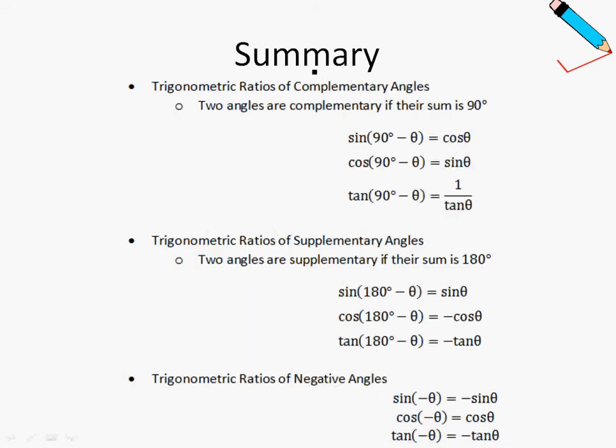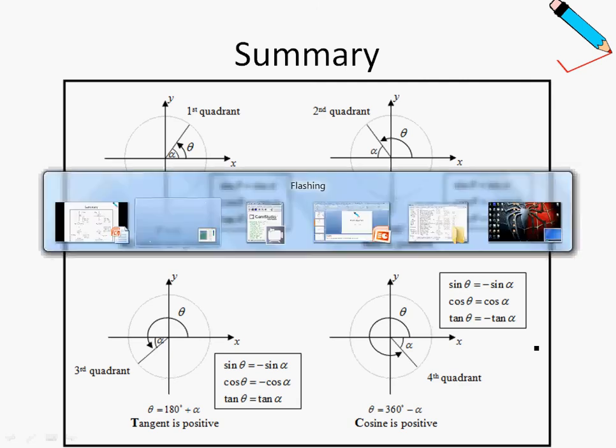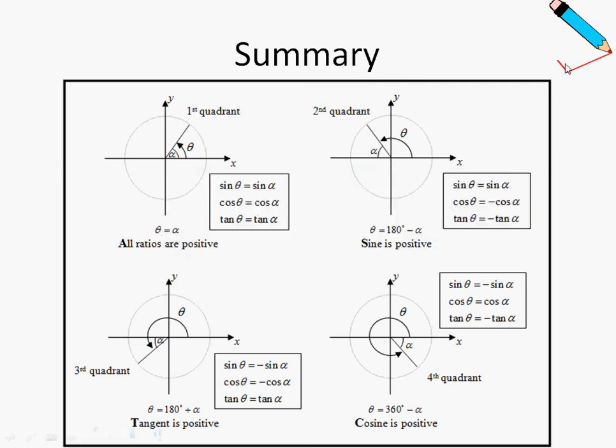Moving on, we learn about the trig ratios of complementary angles, which are summarized over here, and then we also learn about the trig ratios of supplementary angles, and we also learn about the trig ratios of negative angles over here. And before we end off the chapter, we also learn about the ASTC diagram and how to make use of it as you have seen in the examples earlier on. Last but not least, I would just like to leave for you guys with this table over here.